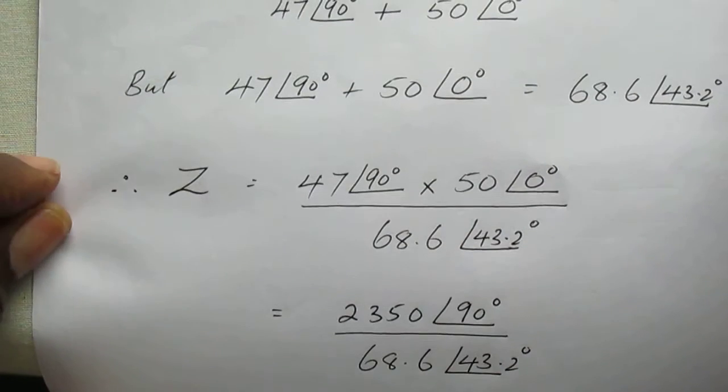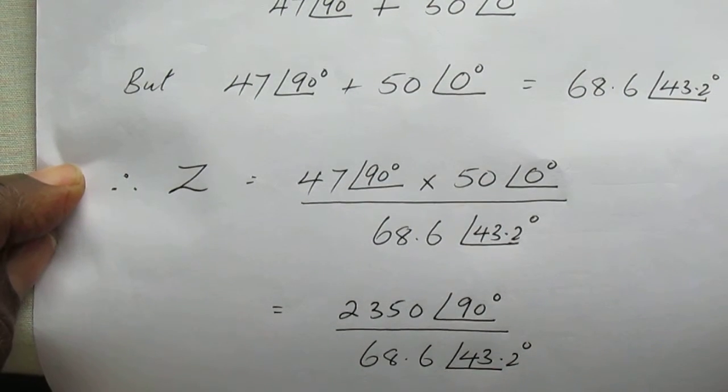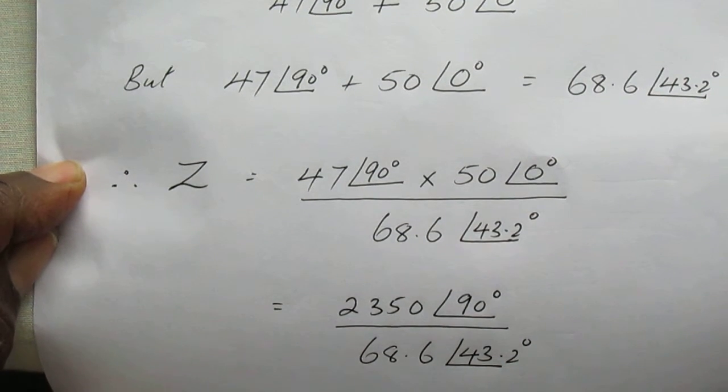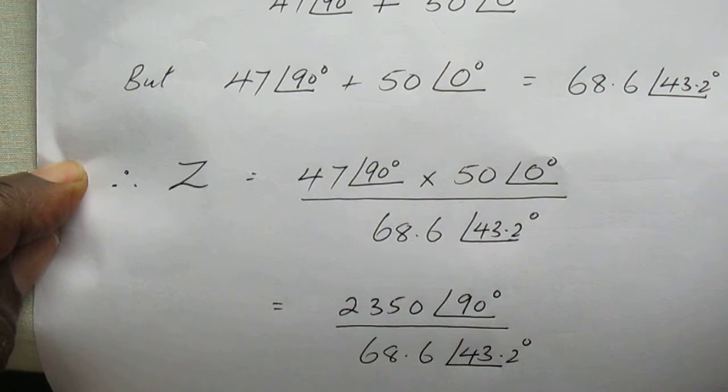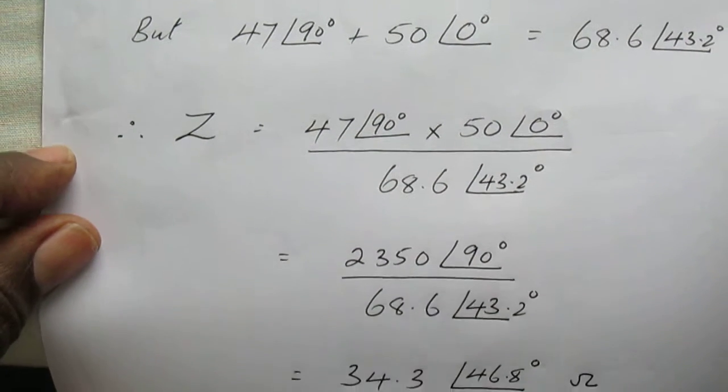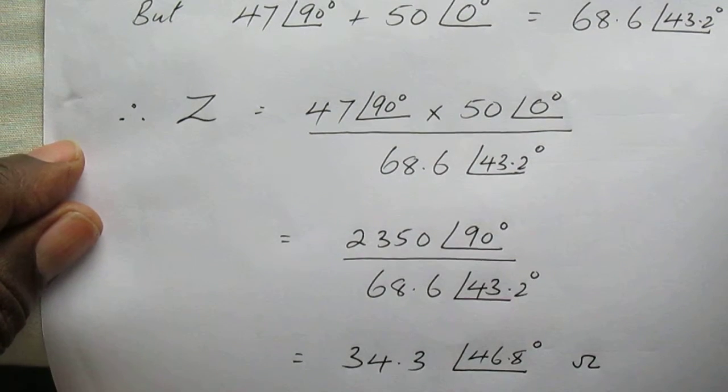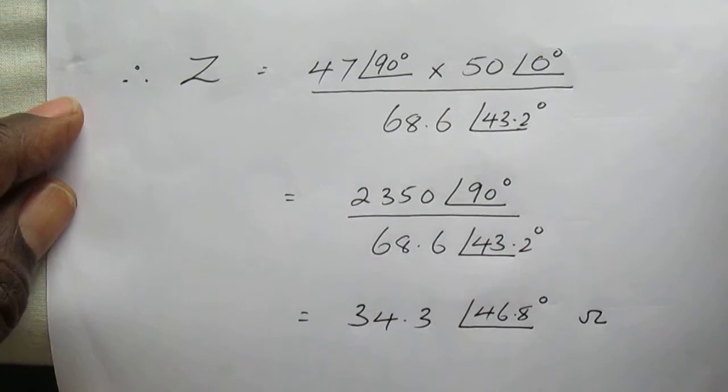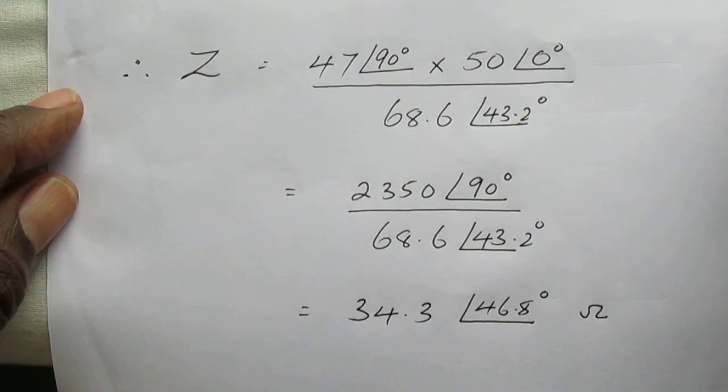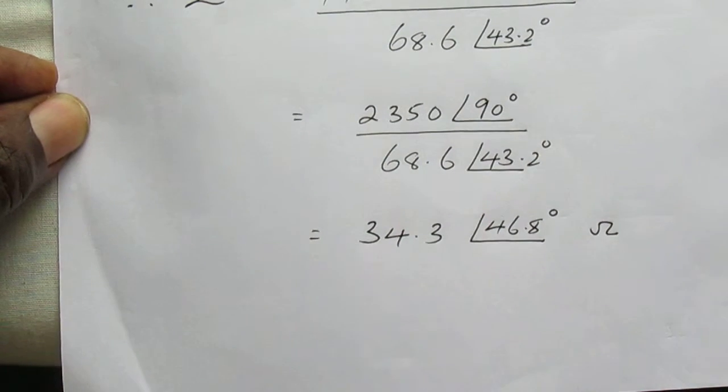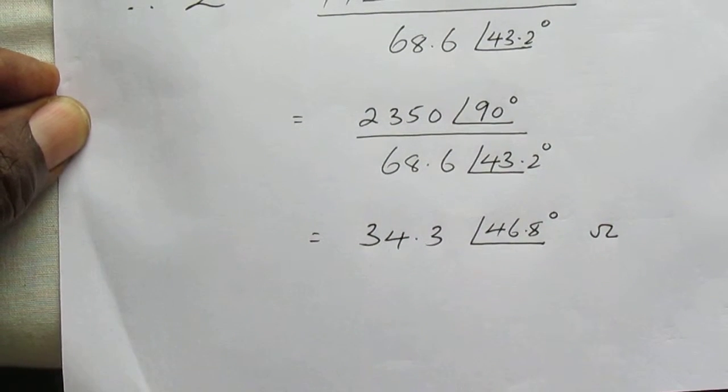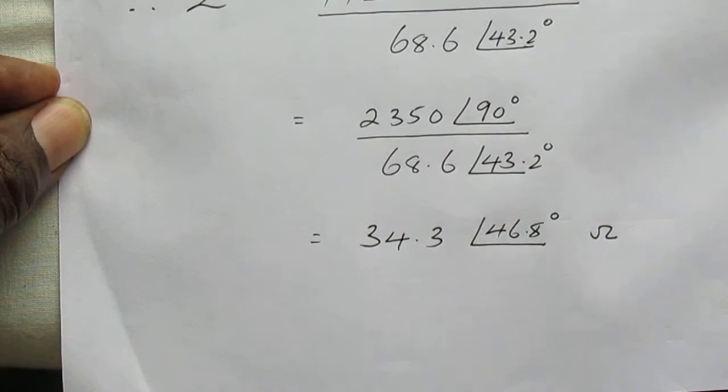Now impedance Z would be 47 angle 90 times 50 angle 0 divided by 68.6 angle 43.2. This gives 2350 angle 90 divided by 68.6 angle 43.2, resulting in impedance of 34.3 angle 46.8 ohms.